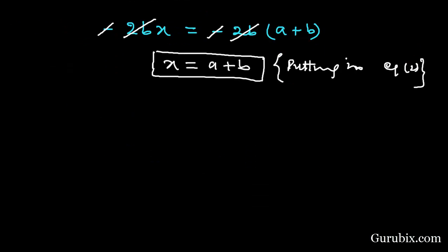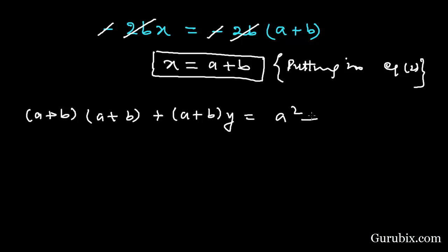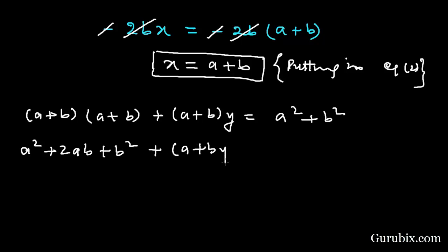Equation number two is (a plus b)(ax plus y) equals a squared plus b squared. We substitute the value of x, that is (a plus b), to get (a plus b) times a times (a plus b) plus (a plus b)y equals a squared plus b squared. Multiplying out gives a squared plus 2ab plus b squared plus (a plus b)y equals a squared plus b squared.